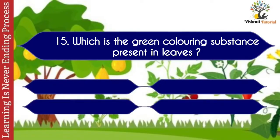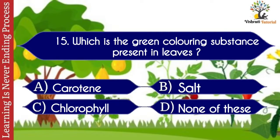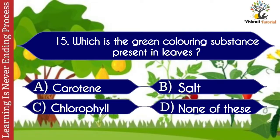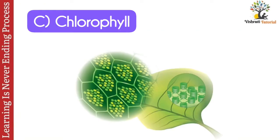Question number fifteen: which is the green coloring substance present in leaves? Options: A. Carotene, B. Salt, C. Chlorophyll, D. None of these. The correct answer is C. Chlorophyll. Chlorophyll is the green coloring substance present in the leaves.